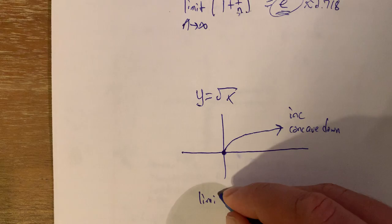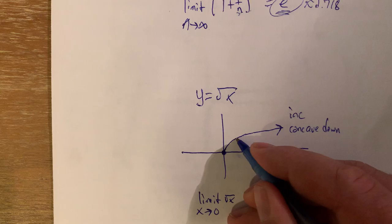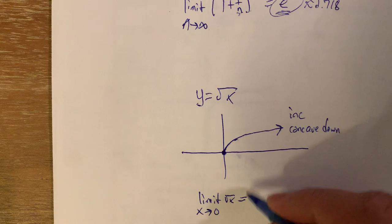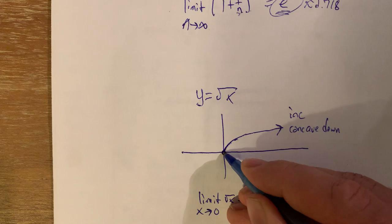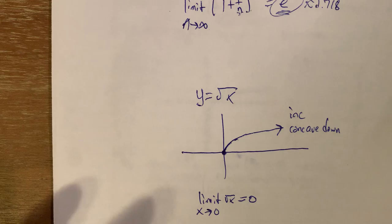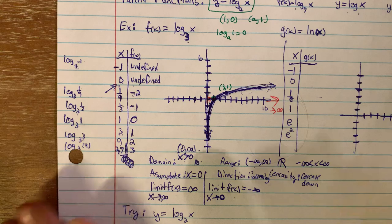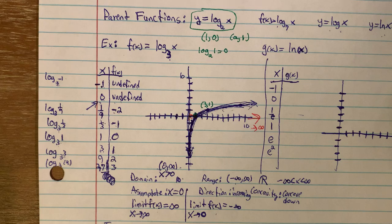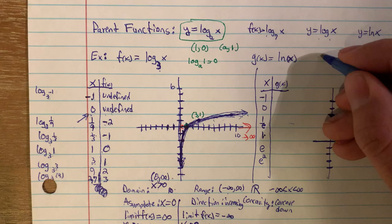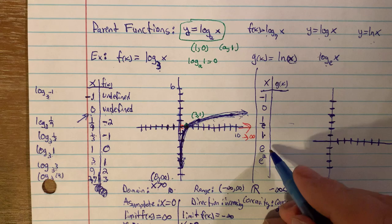Compare this to y equals square root of x, which is also increasing and concave down but doesn't have the asymptote at x = 0. For the square root function, the limit as x goes toward 0 is 0 — the y values get closer and closer to 0. This idea of limits becomes especially important when we start dealing with holes and other discontinuities in graphs.